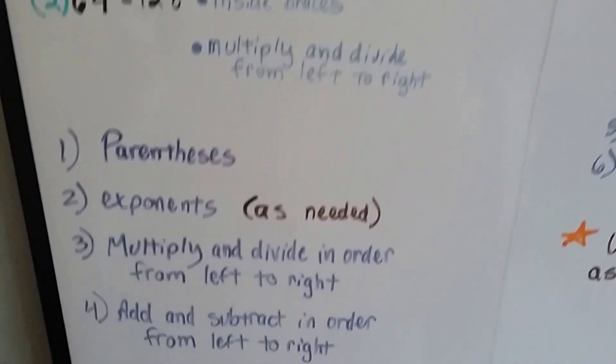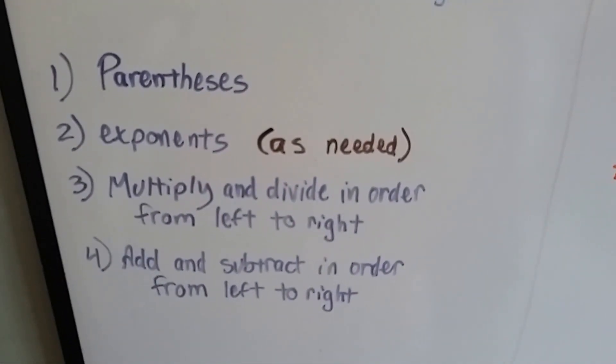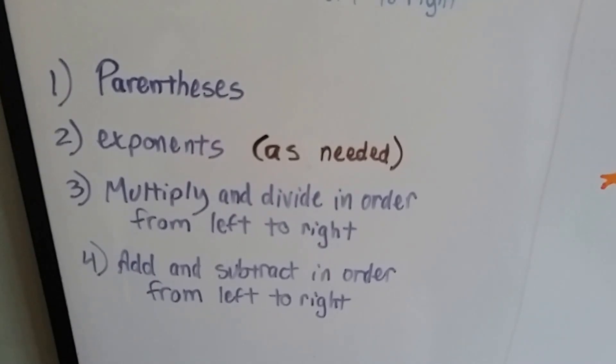Now the normal order of operations says that we do parentheses first, and then we do exponents, and then we multiply or divide in order from left to right, and then we add or subtract in order from left to right.